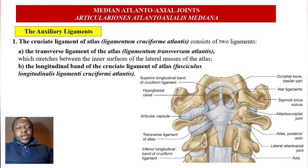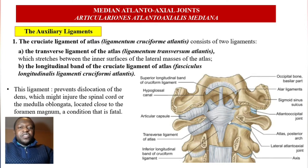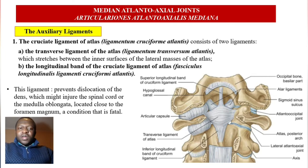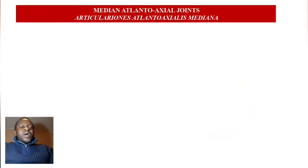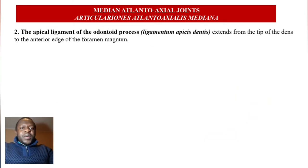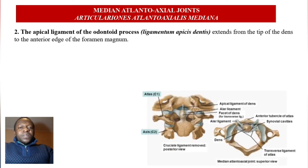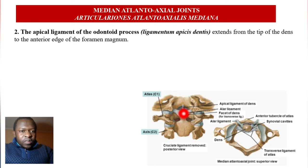The cruciform ligament is very important: it prevents dislocation of the dens, which might injure the spinal cord or the medulla oblongata located in the foramen magnum — a very fatal condition. The second auxiliary ligament is the apical ligament of the odontoid process, ligamentum apicis dentis, which extends from the tip of the dens to the anterior edge of the foramen magnum. You can see this straight ligament here at the apex of the dens.